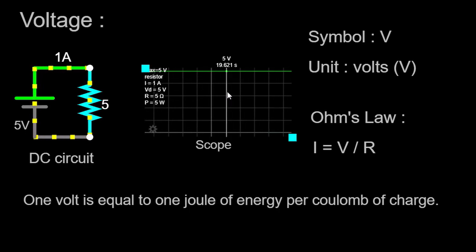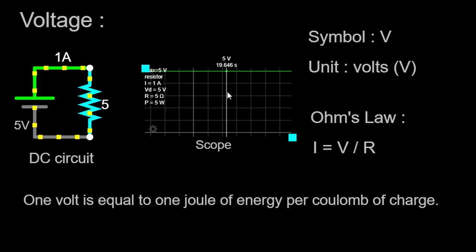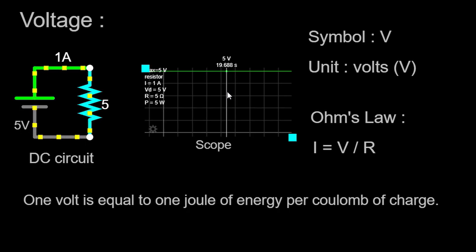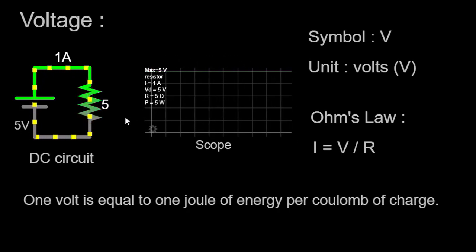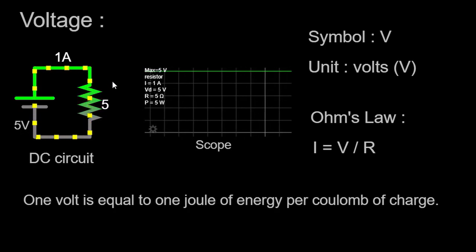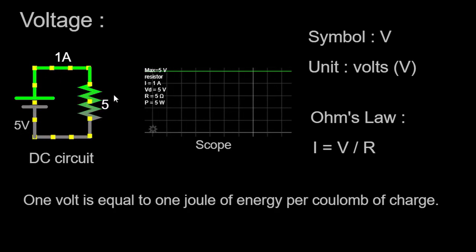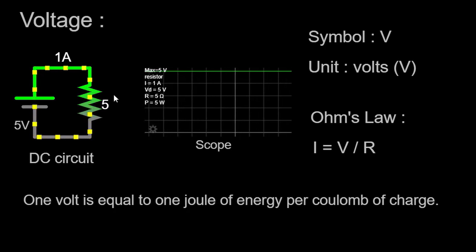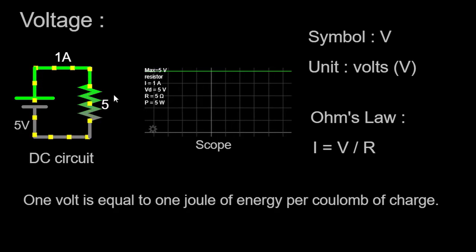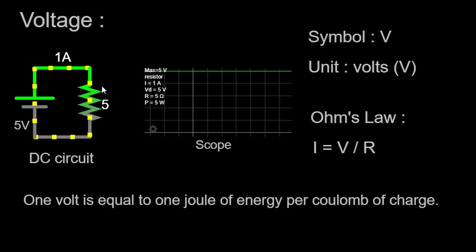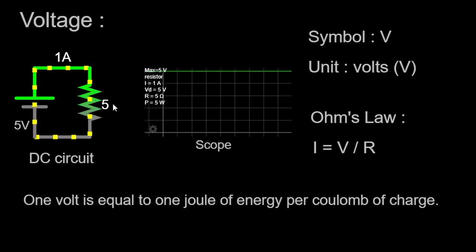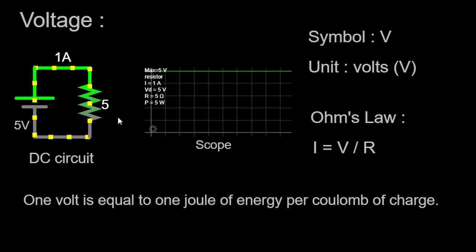It is important to note that the resistor, being a passive component, does not generate or consume energy but rather dissipates it in the form of heat. This dissipation occurs due to the interaction between the flowing current and the resistance offered by the resistor. By adjusting either the resistance or the voltage of the source, we can observe how it impacts the voltage across the resistor. Increasing the resistance value will impede the flow of current, resulting in a larger voltage drop. Conversely, if we increase the voltage of the source, we will observe a higher voltage across the resistor.